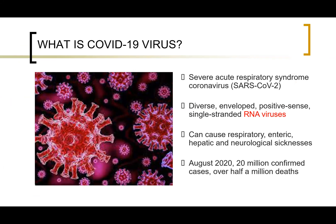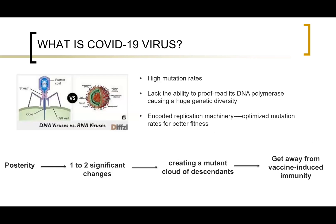The virus causing the COVID-19 pandemic is called Severe Acute Respiratory Syndrome Coronavirus 2, or SARS-CoV-2. It is a profoundly diverse, enveloped, positive-sense, single-strand RNA virus that causes multiple sicknesses in a large scope of animal species, including humans. According to statistics, by August 2020, there were almost 20 million confirmed cases around the world and over half a million deaths. This SARS-CoV-2 virus is an RNA virus, and it is exactly this characteristic that leads to its extremely high mutation rates, which greatly increases the difficulty of vaccine production.